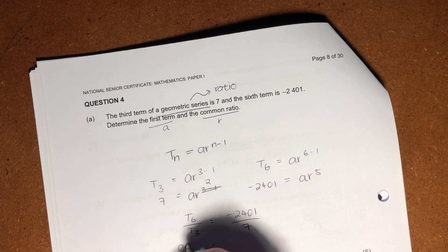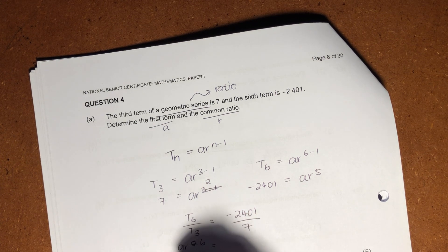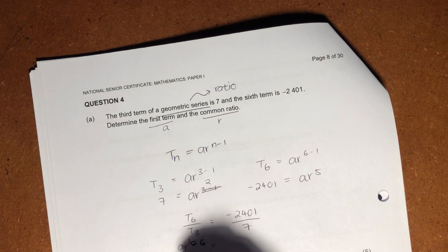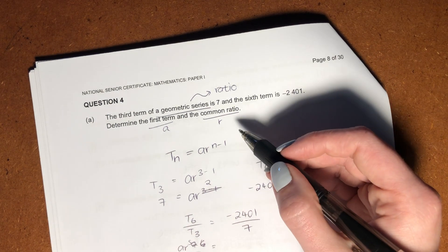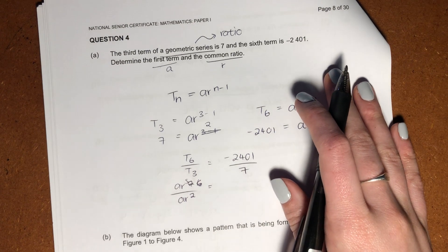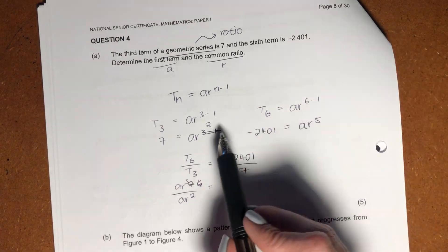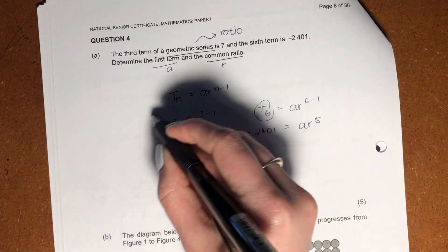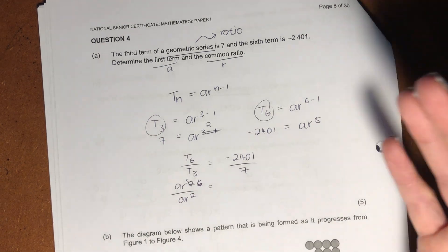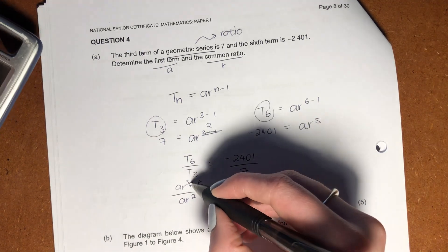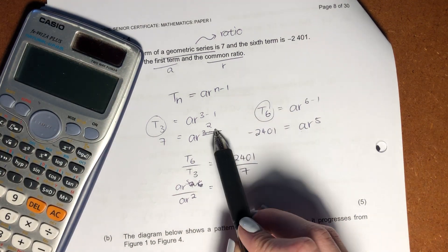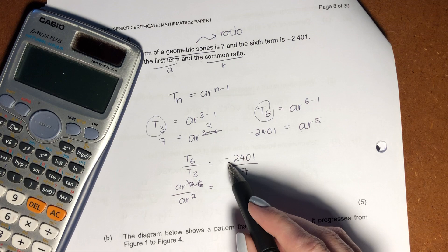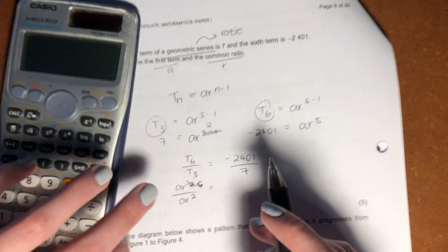Okay, so I know that students often struggle with this a little bit because they're like, oh, how on earth am I supposed to do this? Well, what is a common ratio? We know the common ratio has to do with division. So here we're going to divide my T6 by my T3, and we're going to try and get the ratio by itself.